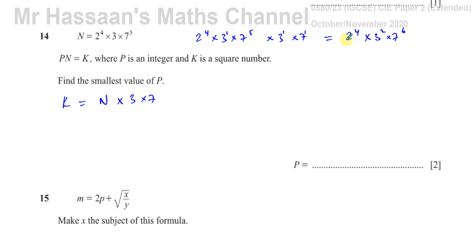When they're all even powers, this is definitely a square number. If I find the square root of this, I'm going to have an integer. If I take the square root of this, it's going to be 2 squared times 3 times 7 to the power of 3. That's the square root of that number. It's going to be an integer. So, that is definitely a square number. If all the powers are even, it's a square number.